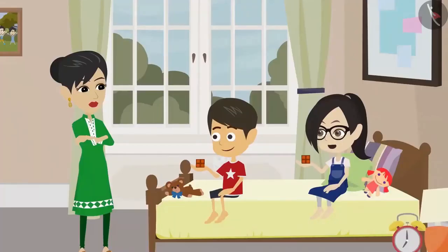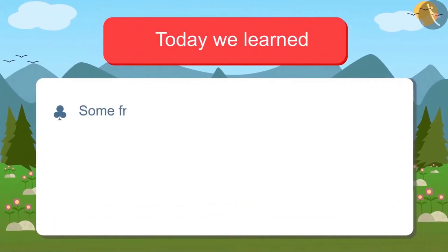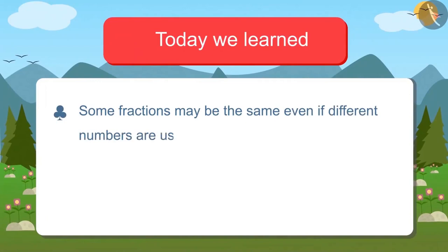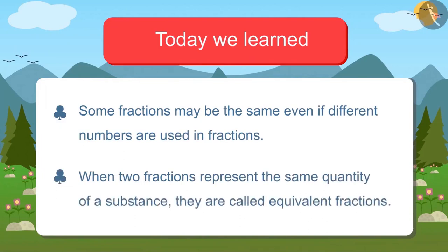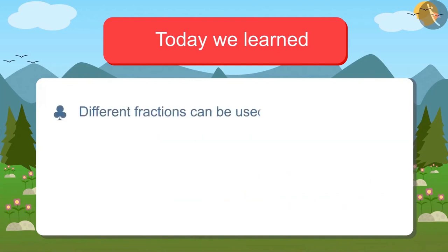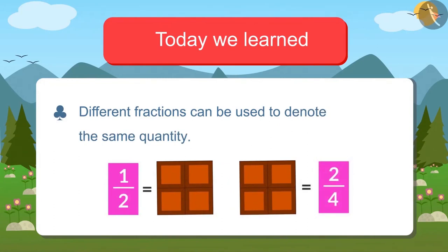You will learn them in detail in further classes. Today we learned that some fractions may be the same even if different numbers are used. When two fractions represent the same quantity of a substance, they are called equivalent fractions. Hence, different fractions can be used to denote the same quantity. For example, to represent half of a chocolate, one can write one half and also two fourths.